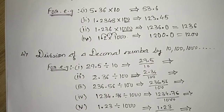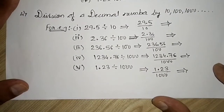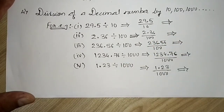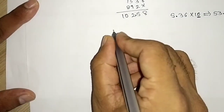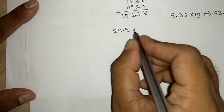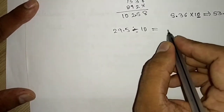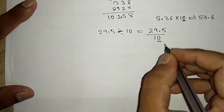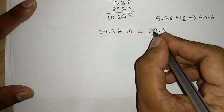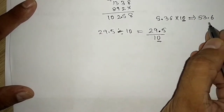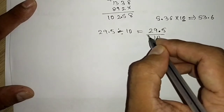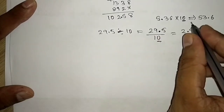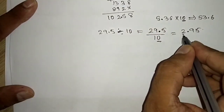Now let us move to division of decimal numbers. When dividing by 10, 100, or 1000, the same idea applies but in reverse. For 29.5 ÷ 10: there is one zero in 10, so shift the decimal point one place to the left. While multiplying you shift right; while dividing you shift left. The answer is 2.95.